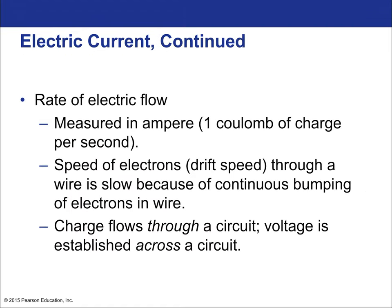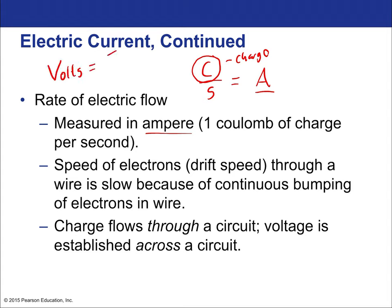The rate of electric flow is measured in the ampere — the coulomb per second. That is the amp. So our units of electricity so far are: the coulomb, which is the unit of charge; the ampere; and the volt, which is energy in joules divided by charge in coulombs.